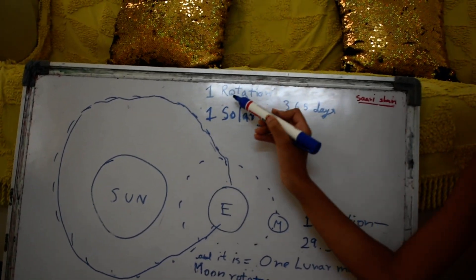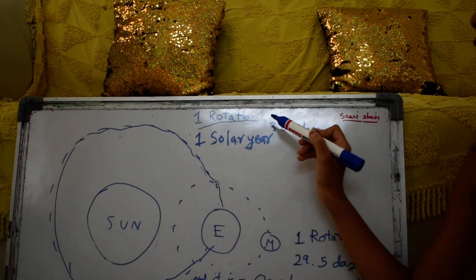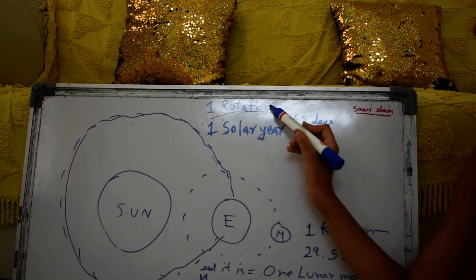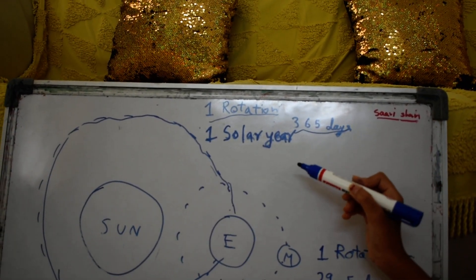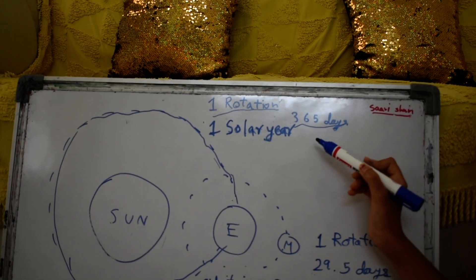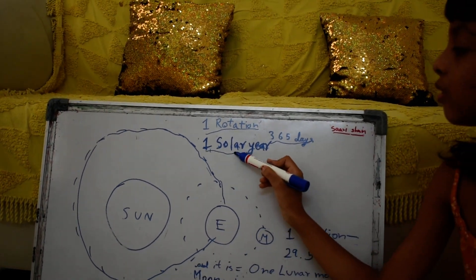And it is called one rotation. To complete one rotation, the earth takes 365 days. And those 365 days is called one solar year.